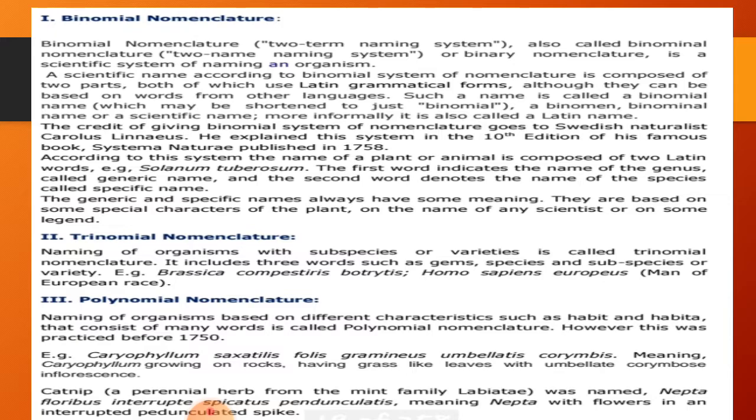There are many words that come from the polynomial naming system. This polynomial nomenclature was practiced before Linnaeus — before the 1750s. This older system was used in the past.